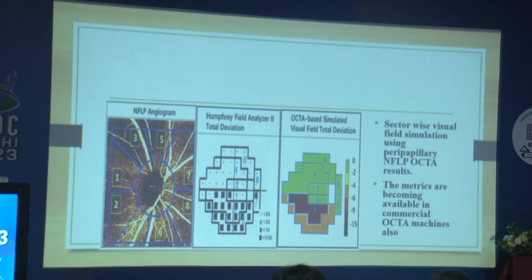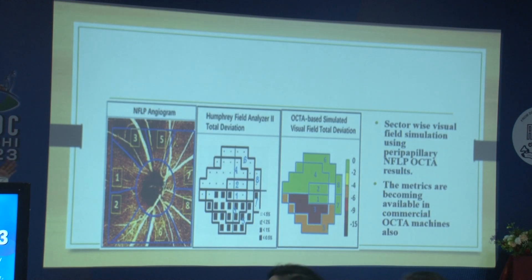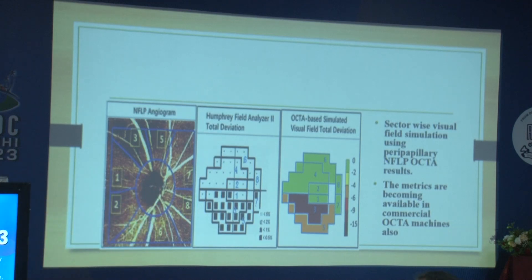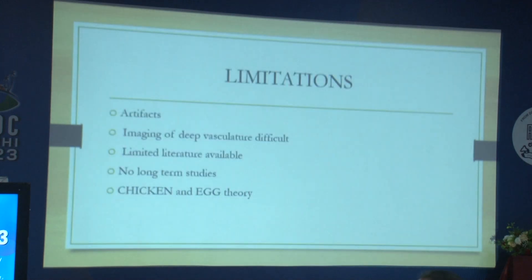For patients who are not comfortable with Humphrey Field Analyzer or automated perimetry, OCTA can provide an overlay of HVF progression through an AI module, generating a simulated HVF for that patient, which can also be used for glaucoma progression monitoring.